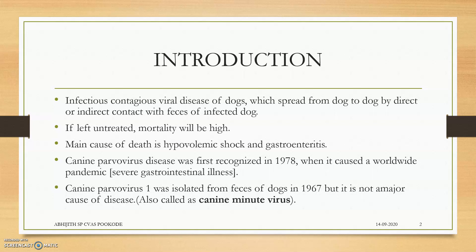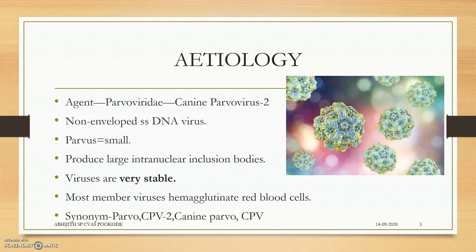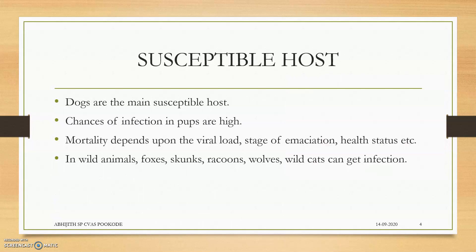Canine parvovirus disease was first recognized in 1978, and was detected in sentry dogs — that is, guard dogs. The family of this virus is Parvoviridae; 'parvo' means small. Canine parvovirus 2 (CPV-2) is the causative agent. It is a non-enveloped, single-stranded DNA virus that produces large intranuclear inclusion bodies in the intestinal cells. The viruses are very stable and also hemagglutinate blood cells. Synonyms include parvo, CPV-2, canine parvo, CPV, etc.